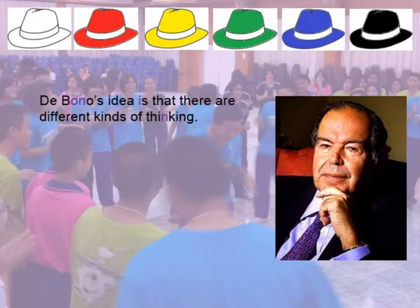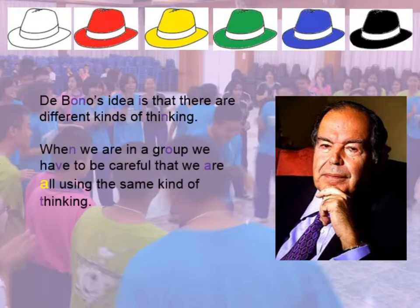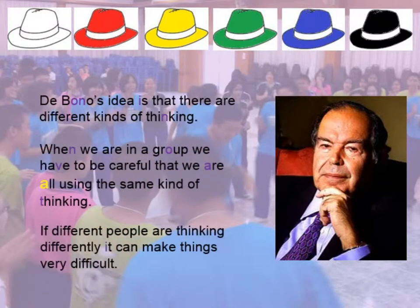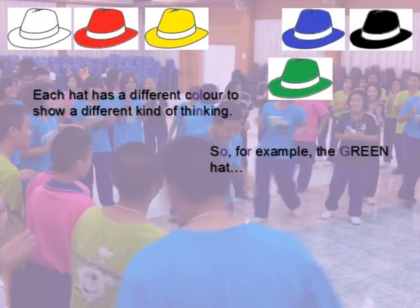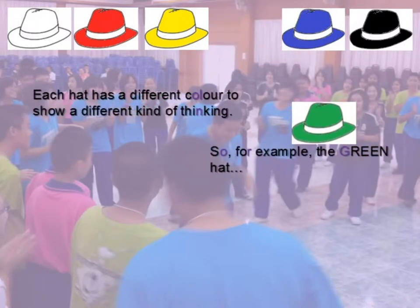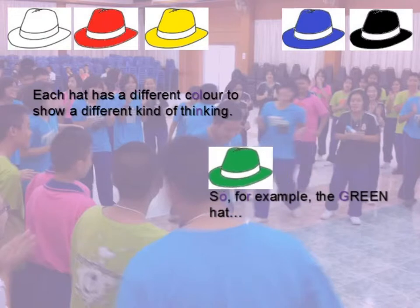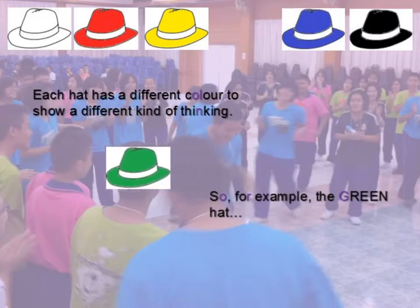The core idea is that there are different types of thinking, and when we're in a group we have to be careful that we're all using the same kind of thinking. If different people are thinking differently, then you can make life difficult for the group. Each hat in the Six Hat Theory has a different color to show a different kind of thinking.